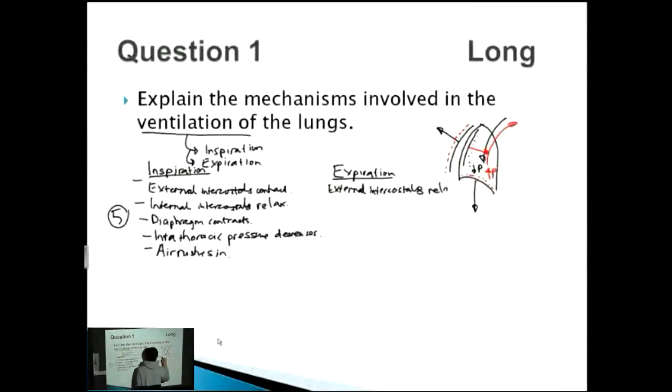So the external intercostal muscles relax, internal intercostals contract, diaphragm relaxes. What happens to the pressure now? Intrathoracic pressure increases and air rushes out.